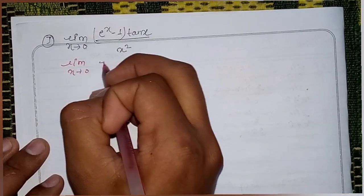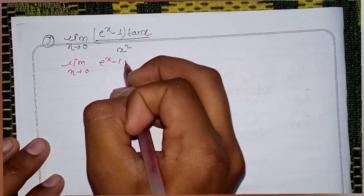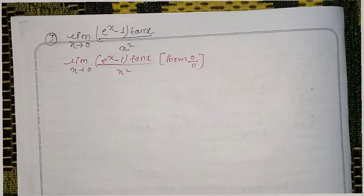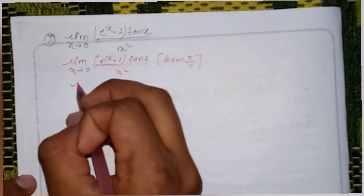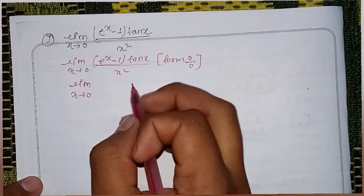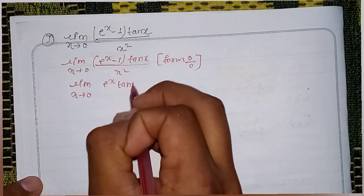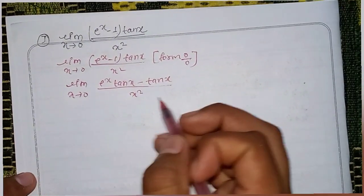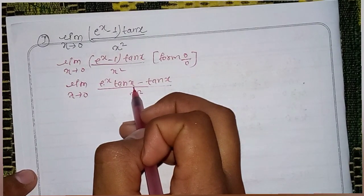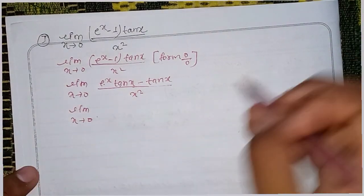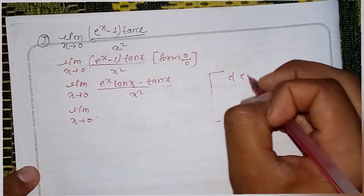First, x tends to 0, 1 power x minus 1, tan x divided by x square — from 0 by 0 form. So we can solve using derivative. Derivative: limit x tends to 0.